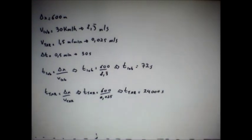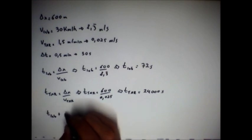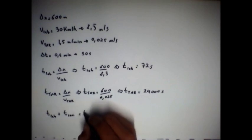Então, para que a lebre não perca a corrida, o seu tempo de percurso somado com o tempo da soneca tem que ser igual ao tempo de percurso da tartaruga. Então, o tempo da lebre mais o tempo da soneca é igual ao tempo da tartaruga.